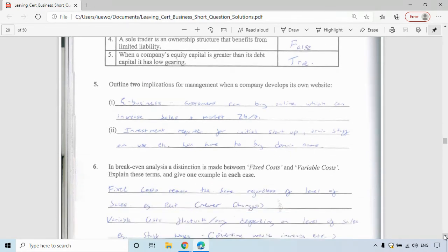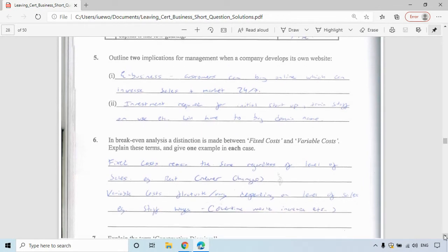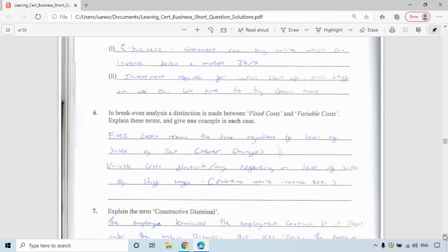In breakeven analysis, distinction between fixed and variable costs. You need to explain these terms and give one example of each. Fixed costs are costs that remain the same regardless of level of sales, like rent. The rent for the business will never change regardless of the level of sales, and that will have to be paid. Variable costs fluctuate or vary depending on the level of sales, like staff wages. Overtime would increase if there's more demand for your product. You need more staff there, so you may have to pay more for that.